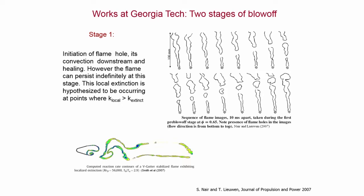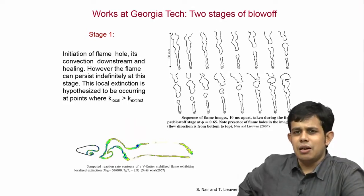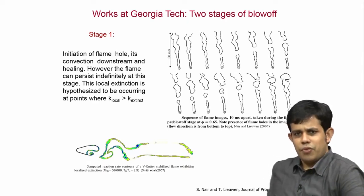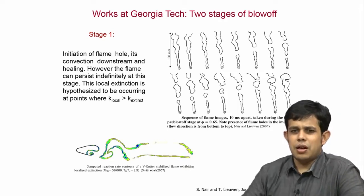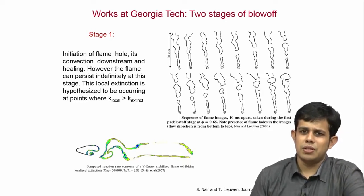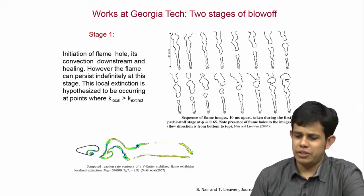In recent work from about 10 years ago, appearing in the Journal of Propulsion and Power from Georgia Tech, they used Mie scattering images — putting olive oil droplets in the flow, shining a laser, and allowing the olive oil droplets to scatter the light. The boundary where the olive oil droplets evaporate can be considered as a flame boundary, and they investigated how the flame structure looks as blow-off is approached.